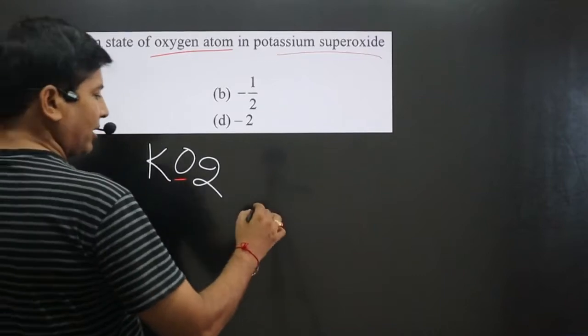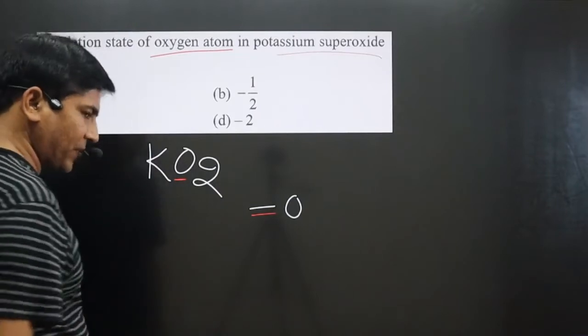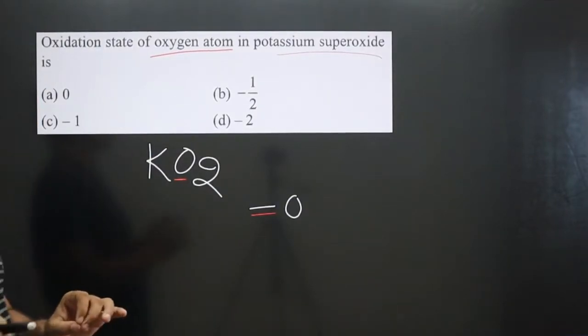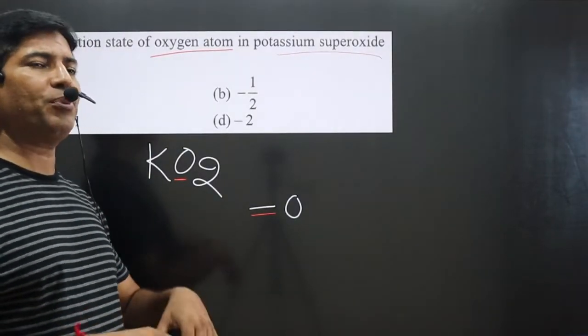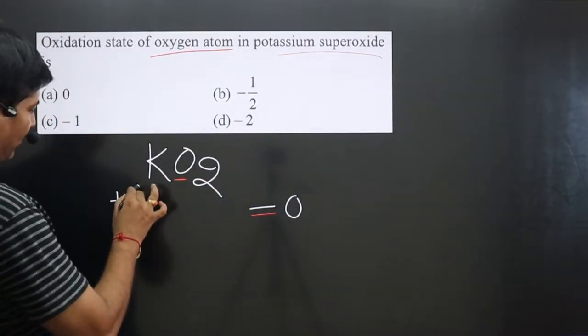For a neutral compound, the total oxidation number of all atoms is always equal to zero. Potassium is a first group element, and first group elements present in any compound will always show plus one oxidation number.